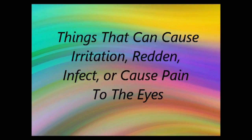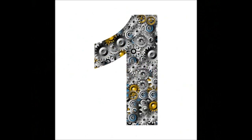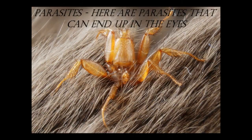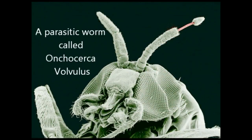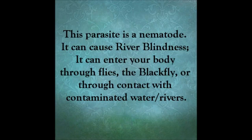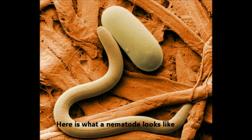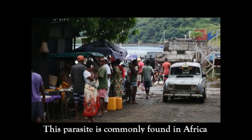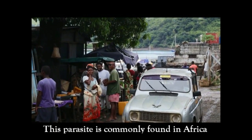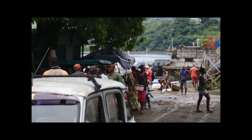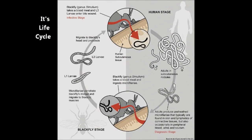Things that can cause irritation, redness, infection, or pain to our eyes. Number one: parasites. Onchocerca volvulus is a parasite that can cause river blindness. It is spread by the black fly and contact with contaminated water. It is a type of nematode and is commonly found in Africa. Here is an image of its life cycle.